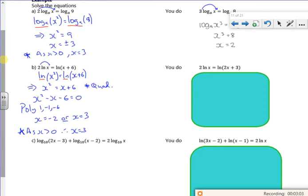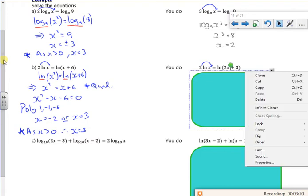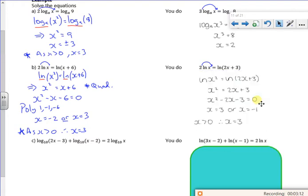There's more to it than that now. So one for you to have a go at. So you've got a log of x squared, log of 2x plus 3. Put them together, I get a quadratic. Move it all over.